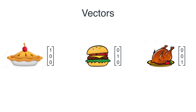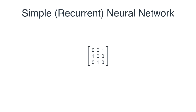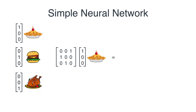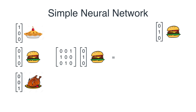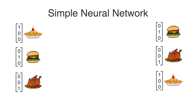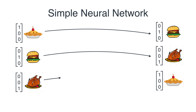Recall that the vectors for the food are (1,0,0) for apple pie, (0,1,0) for the burger, and (0,0,1) for the chicken. The neural network is going to be this matrix — a very simple matrix. If we multiply it by the apple pie vector, we get the vector corresponding to a burger. If we multiply the matrix by the burger vector, we get the vector of the chicken. And if we multiply the matrix by the chicken vector, we get back the apple pie vector.